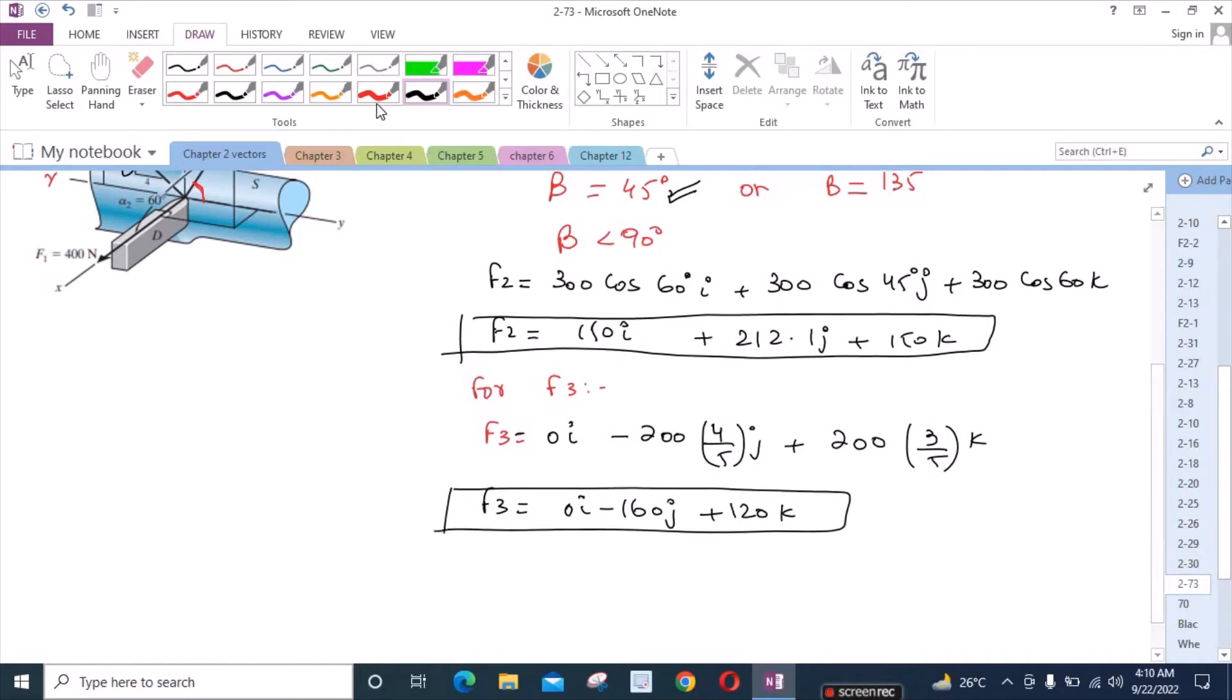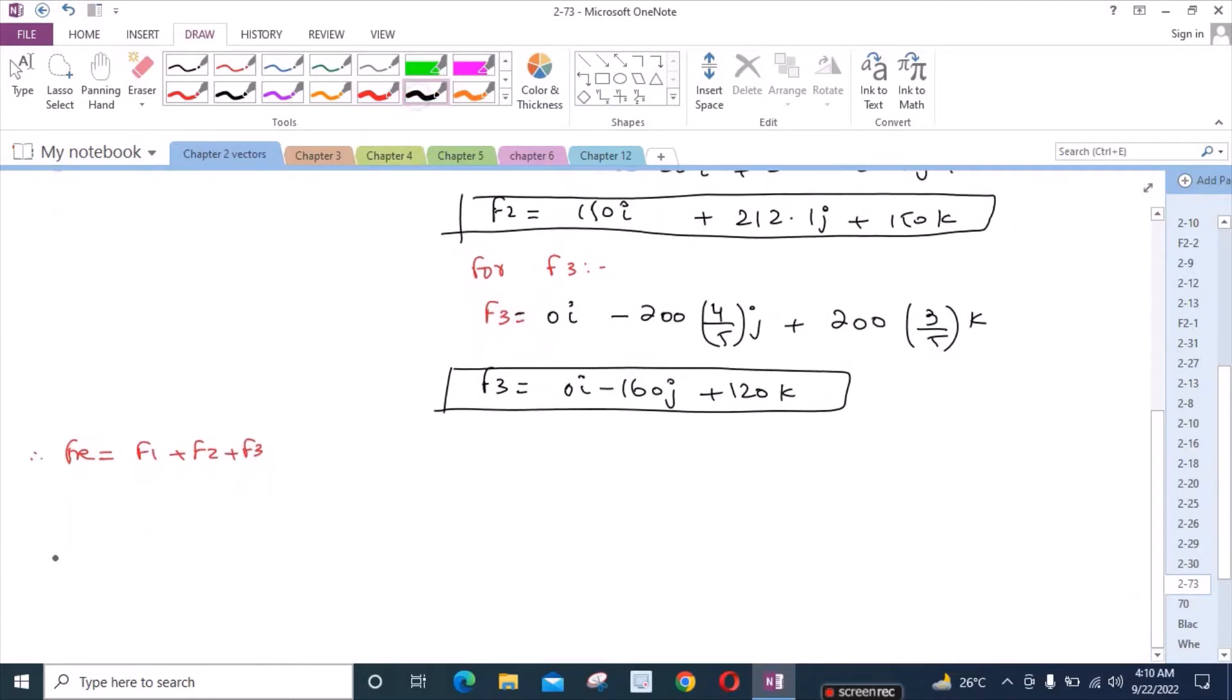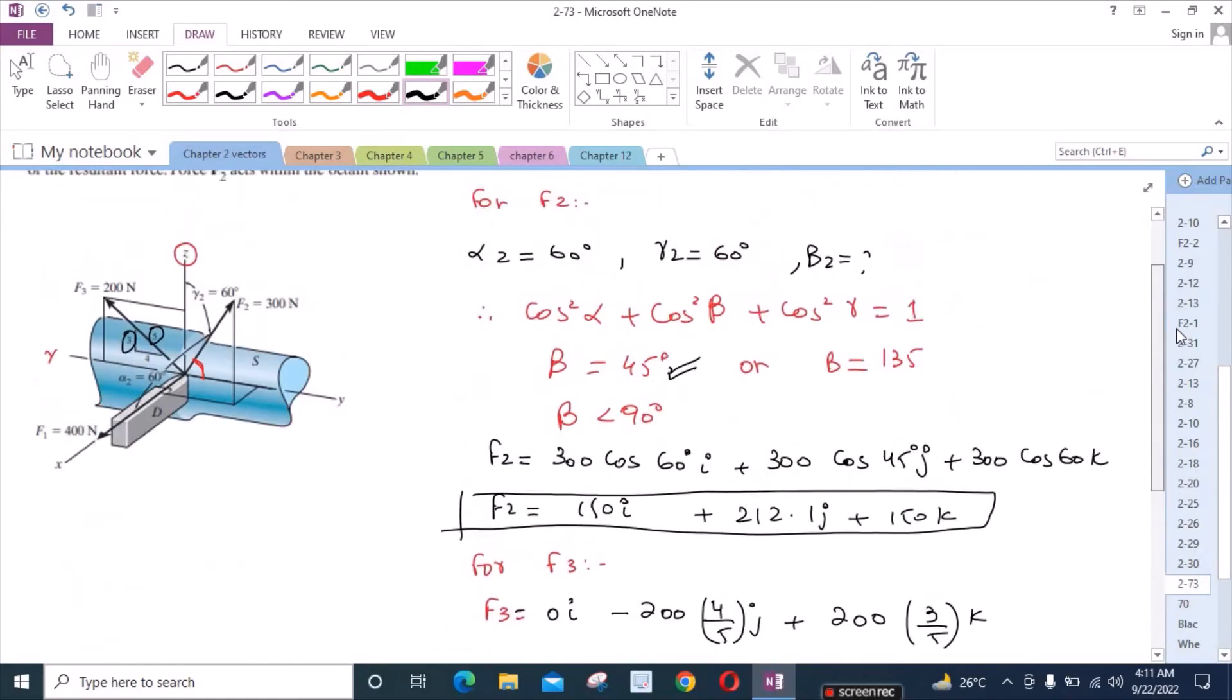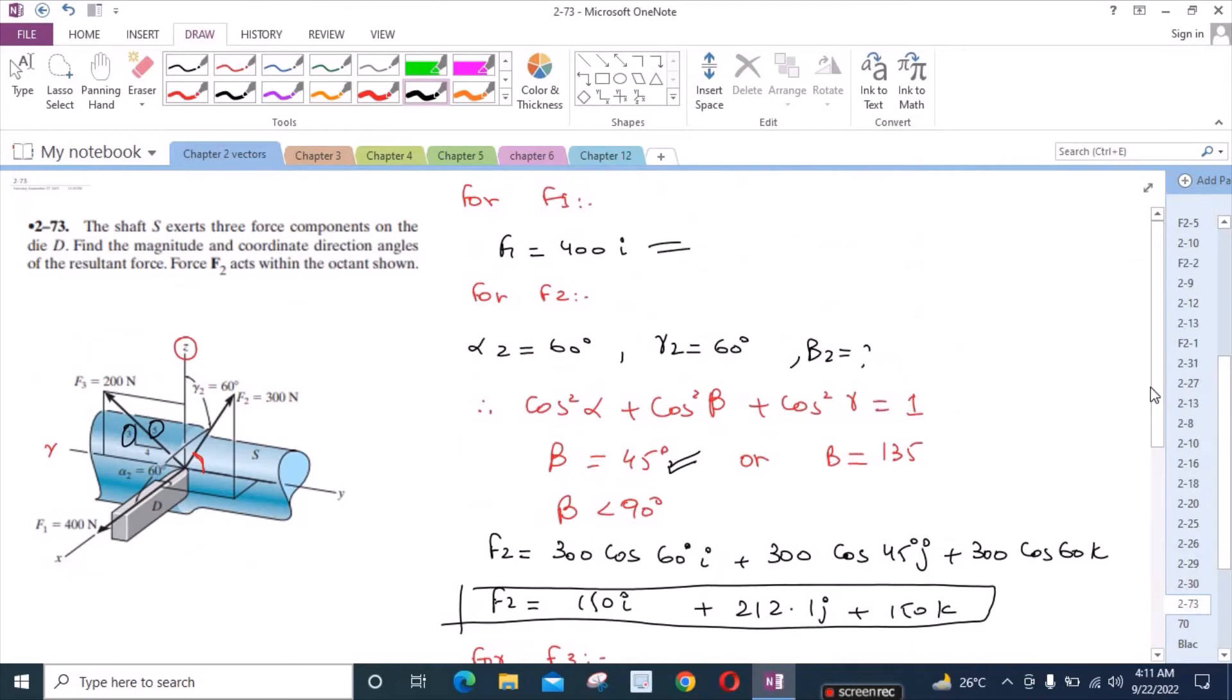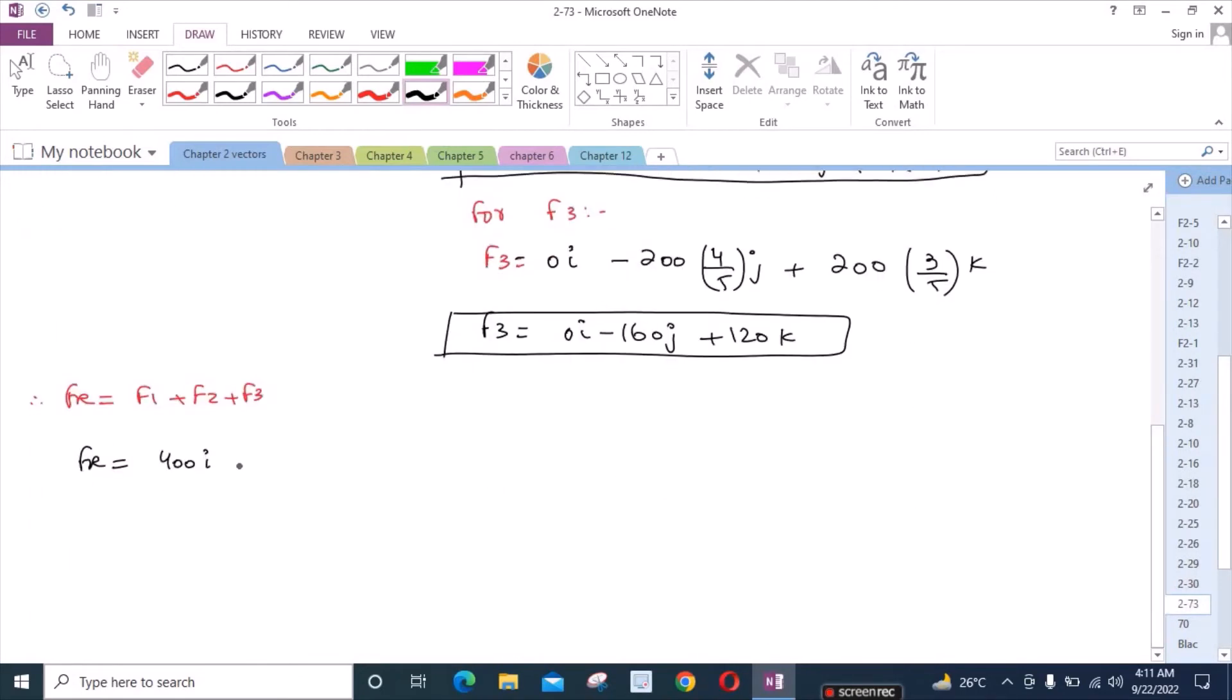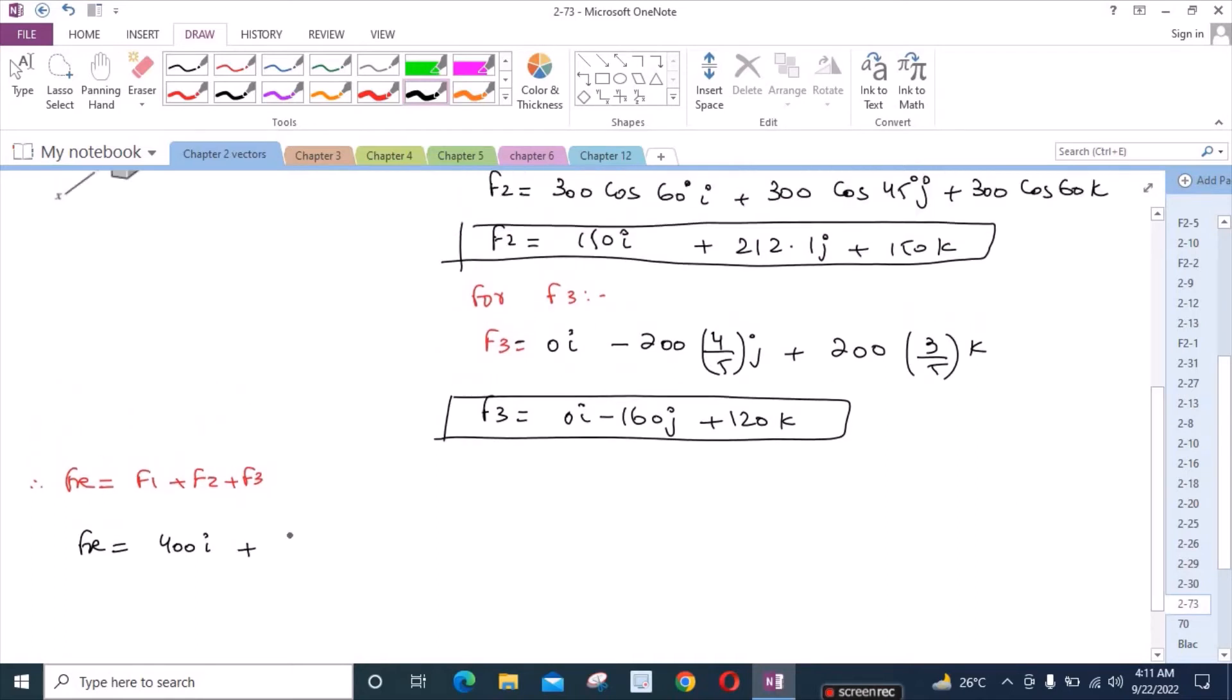Now to find the resultant, we have to add all these three forces. So for FR, we have to add F1 + F2 + F3. FR = 400i + 150i + 212.1j + 150k + 0i - 160j + 120k. From here, FR can be written as 550i + 52.1j + 270k.